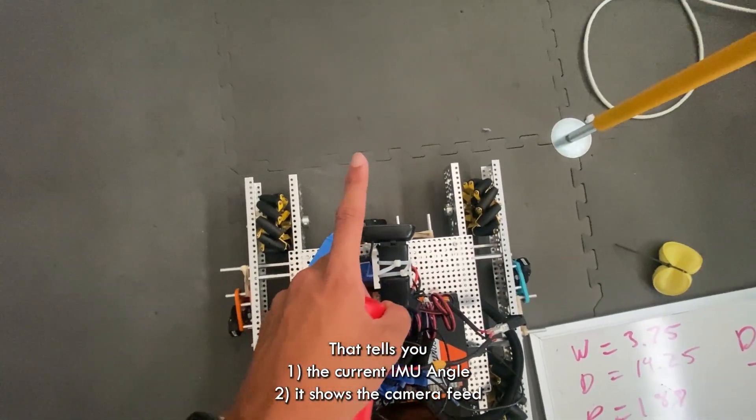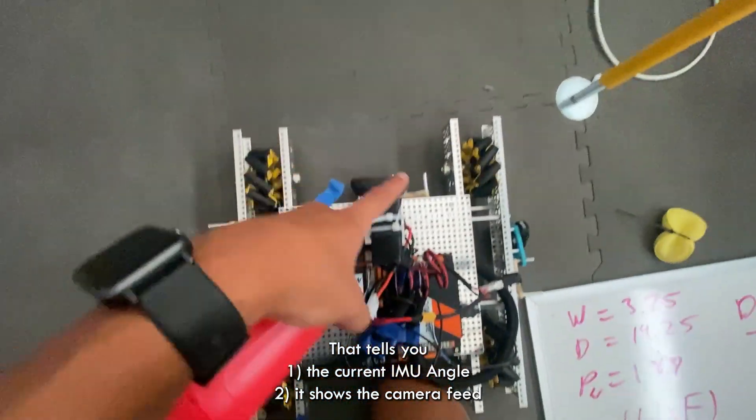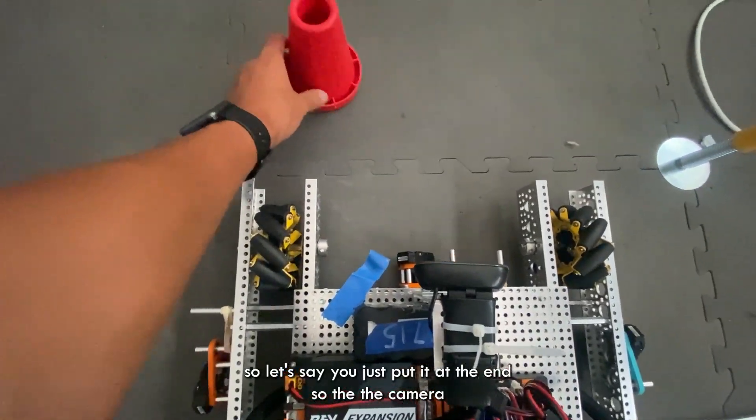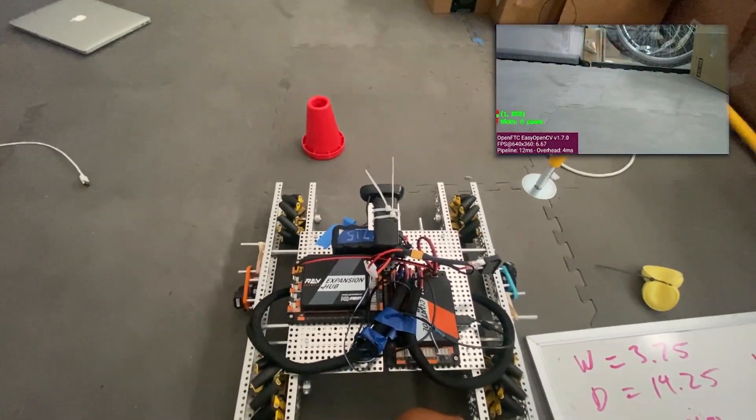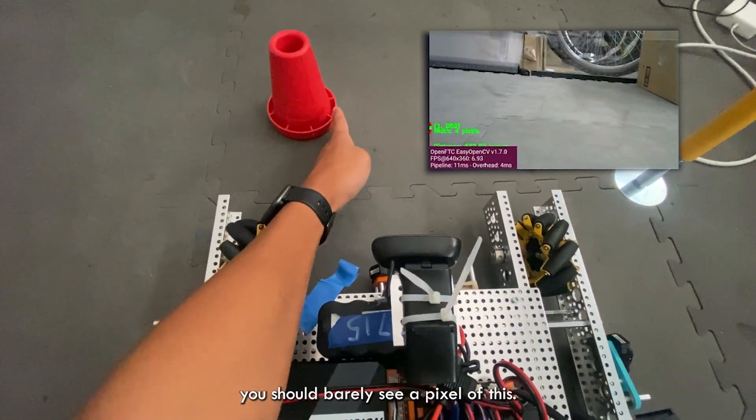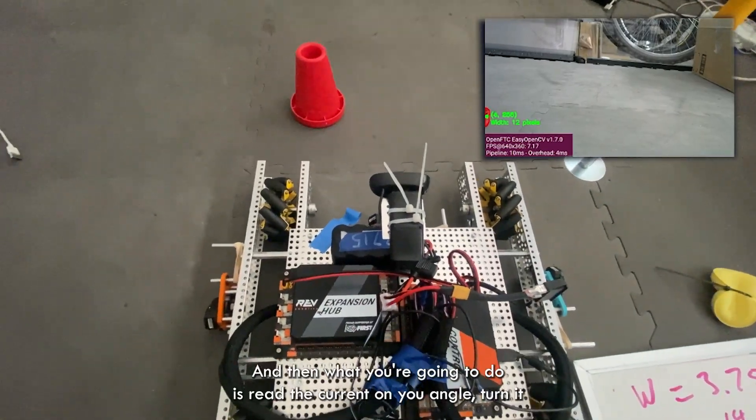So let's say you just put it at the end so the camera should barely see a pixel of this. And then what you're going to do is read the current IMU angle, turn it until the cone is fully on the right side of the camera and you can barely see it.